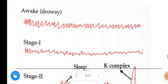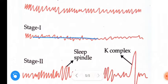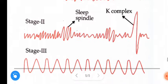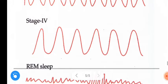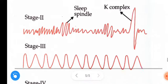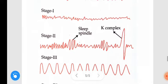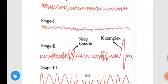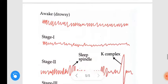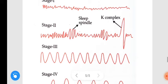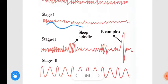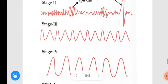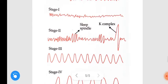See one by one. This is stage 1, stage 2, stage 3, and stage 4. If you observe all these waves, you can identify that from stage 1 to stage 4 there is a progressively slower frequency. And if you observe here, there is higher amplitude.